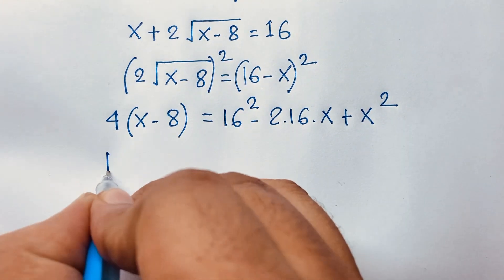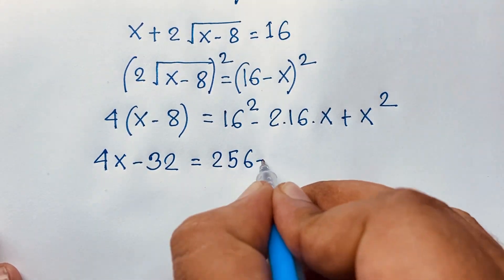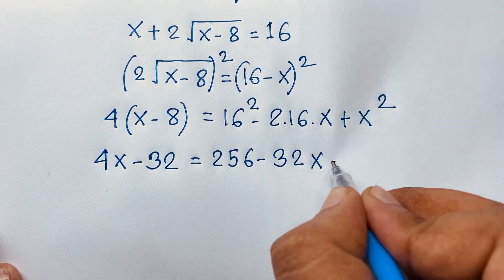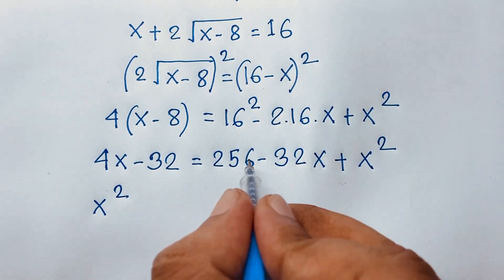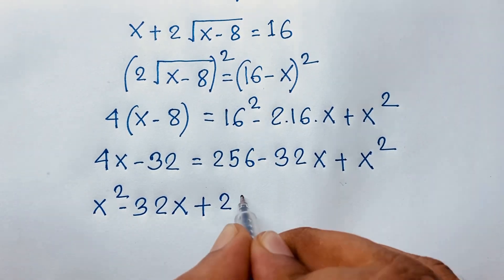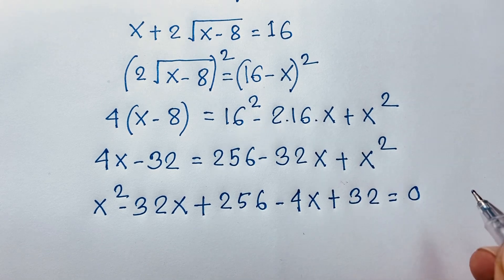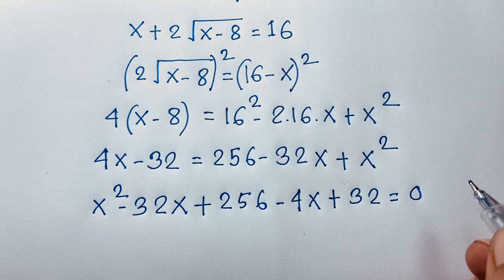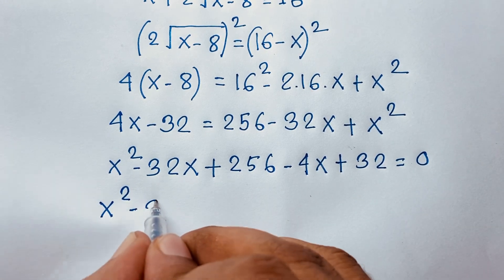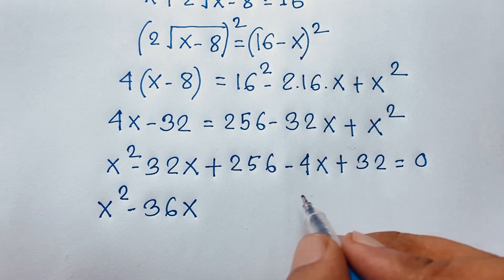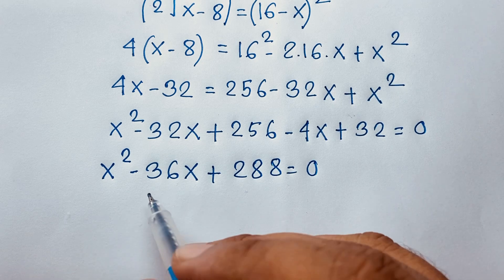So here, 4 times x is 4x and 4 times 8 is 32. Then 16 squared is 256, minus 2 times 16 gives 32x, plus x squared. Collecting terms: x squared minus 32x plus 256, and moving negative 4x and positive 32 to this side, gives x squared minus 36x plus 288 is equal to 0. This is a nice quadratic equation.